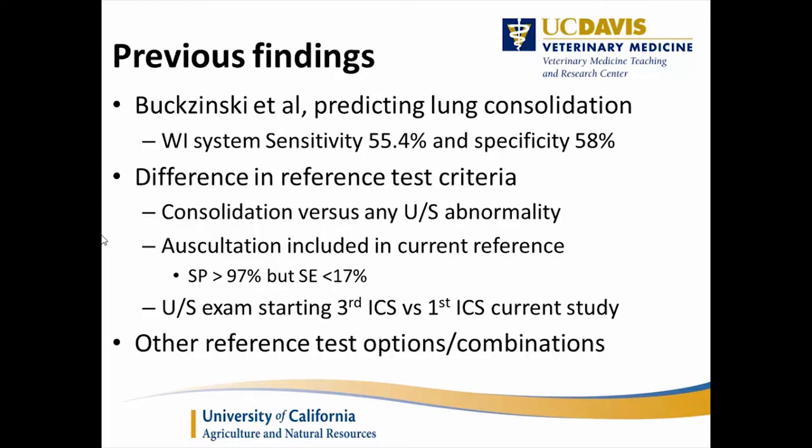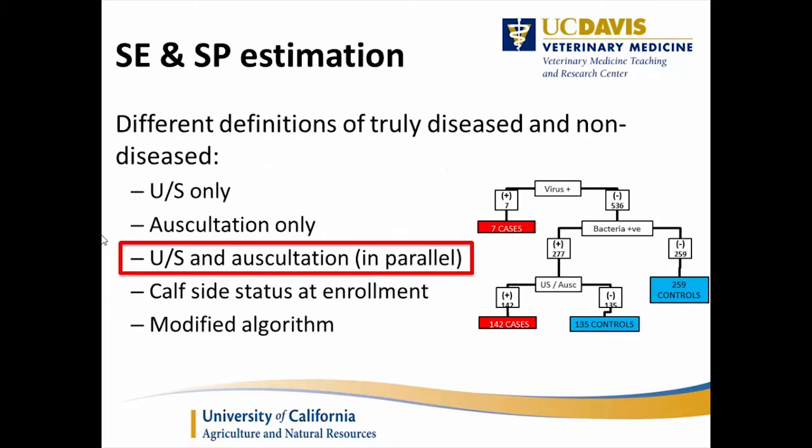There are other reference test options to consider: ultrasound only, auscultation only, both in parallel as in the data presented, or calf status at enrollment as a consensus opinion about whether that calf is a BRD case at enrollment. There's also a modified algorithm similar to the first study, using virology — specifically IBR and BRSV — where positive calves are called a case, and aerobic or mycoplasma culture positives require ultrasound or auscultation abnormalities to be called a case.